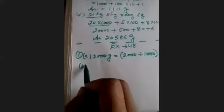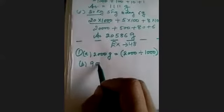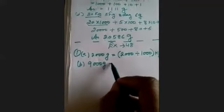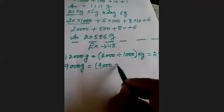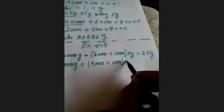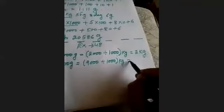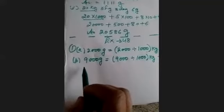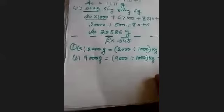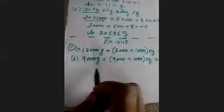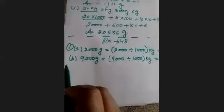Part B: 9000 grams. 9000 ÷ 1000 = 9 kg. Complete parts C and D of question one on your own.